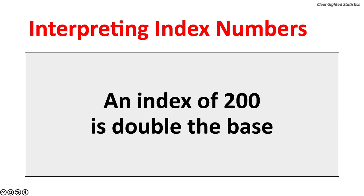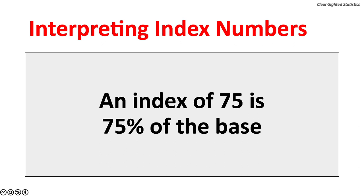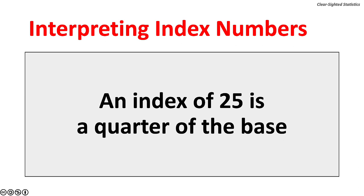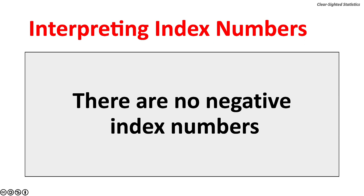Interpreting index numbers: an index of 200 is double the base. An index of 300 is triple the base. An index of 75 is 75% of the base, or 25% below the base. An index of 50 is half of the base. An index of 25 is a quarter of the base, or 75% below the base. The smallest possible index number is 0, which is 100% below the base. There are no negative index numbers.